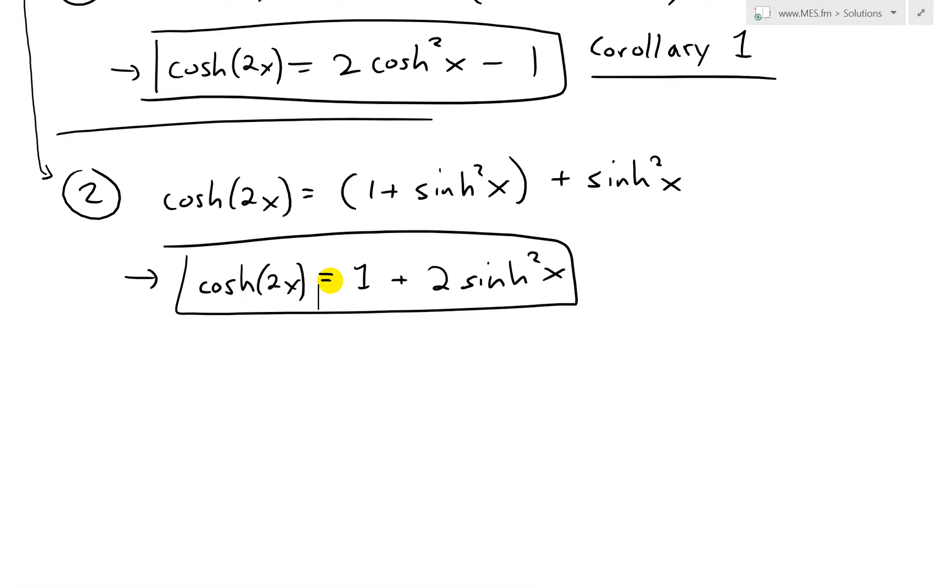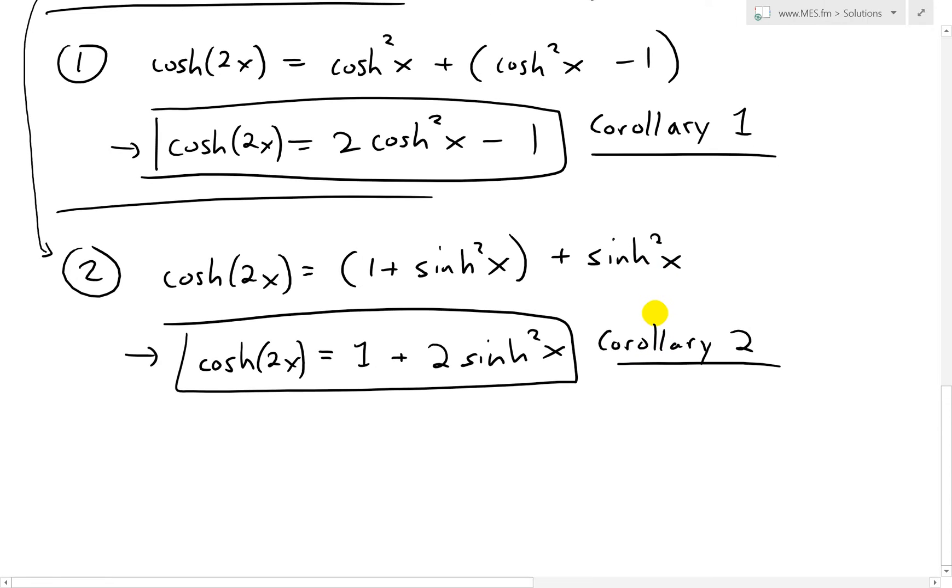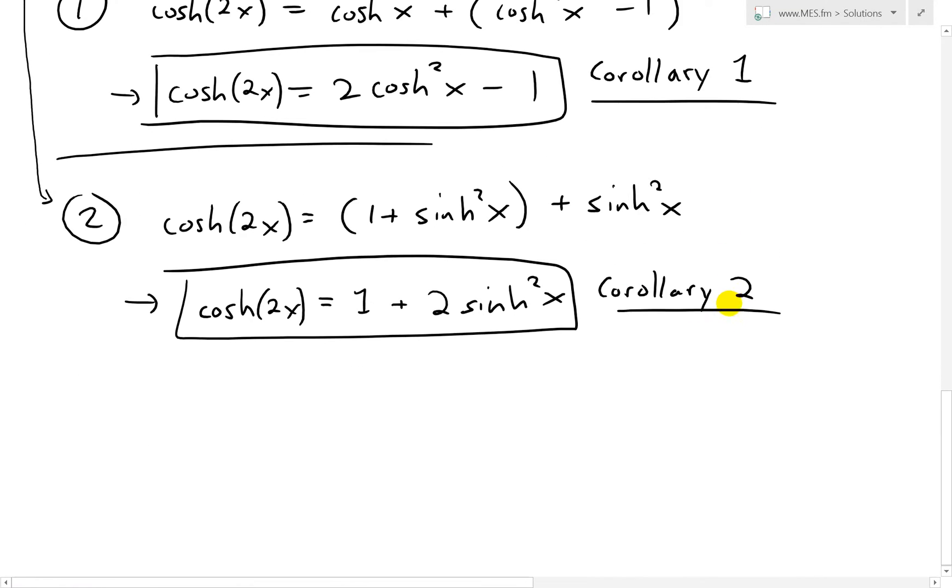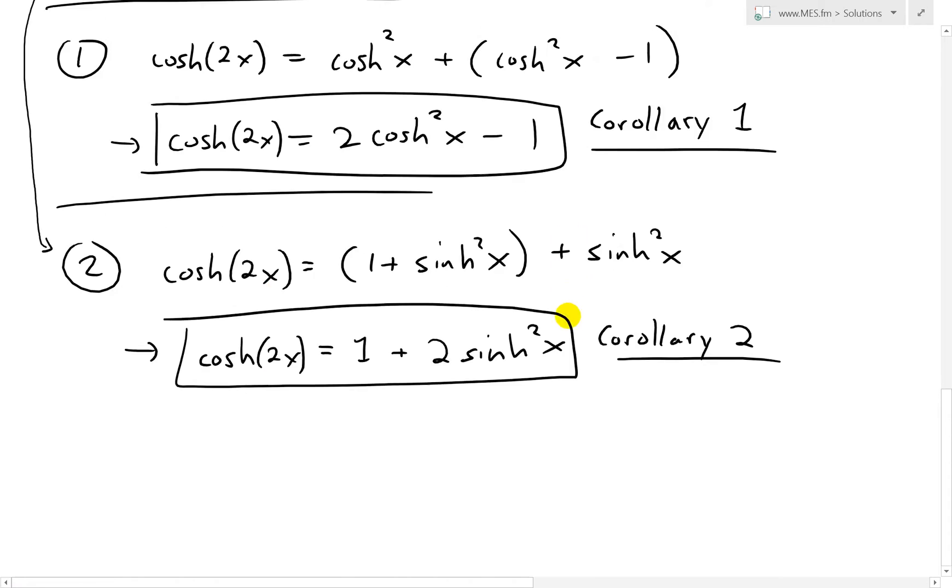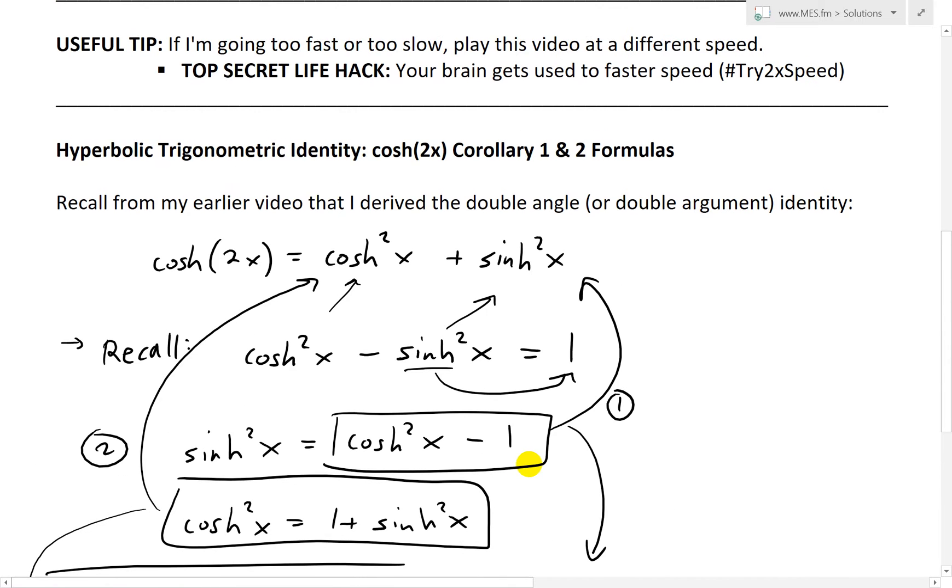Yeah, with hyperbolic tangent, but we'll just leave it like that, that's a bit more complicated, and it's not used as often I believe. So now this one's number 2, corollary number 2, or the second formula that's used often that's derived, and again it's from the same cosh(2x) above formula over here.